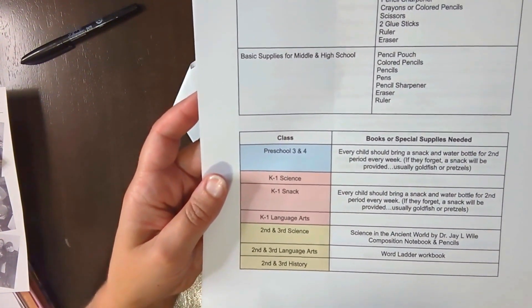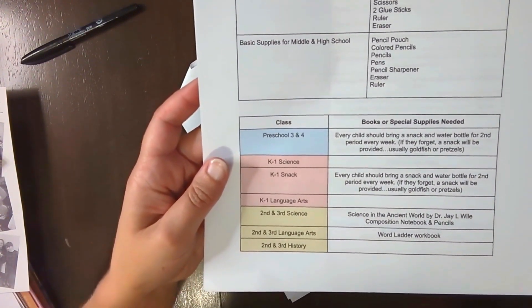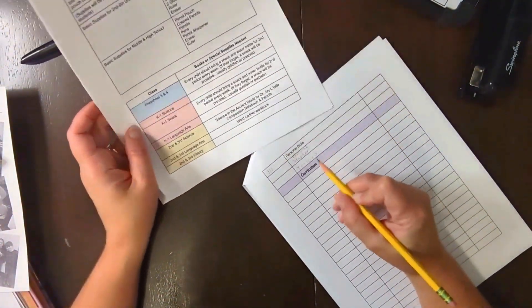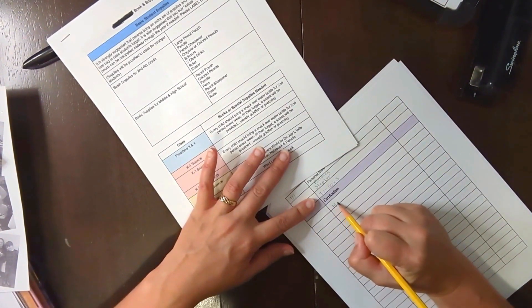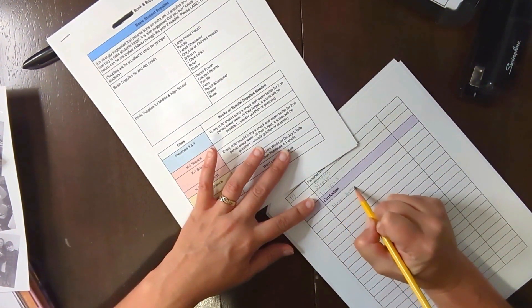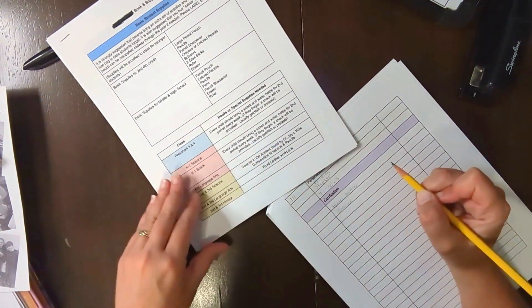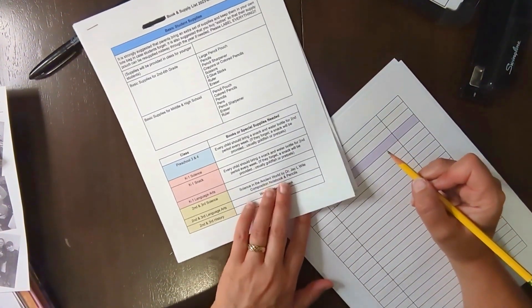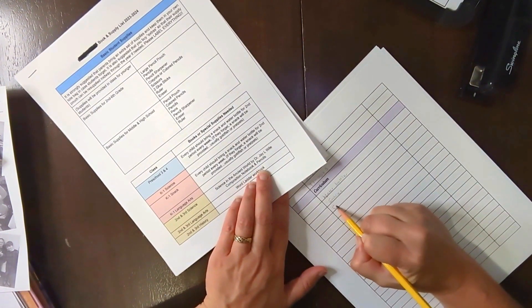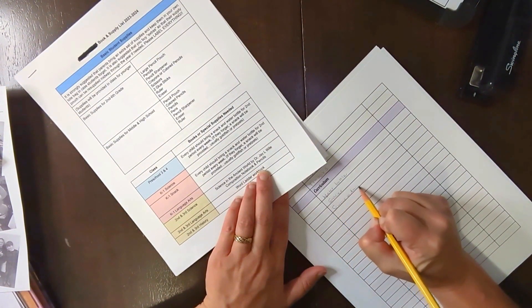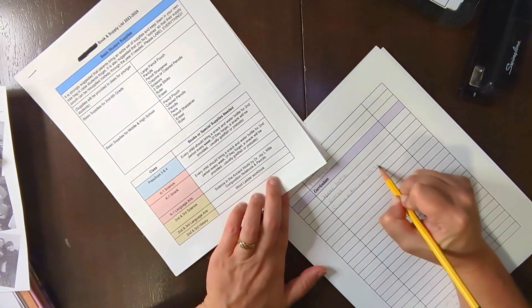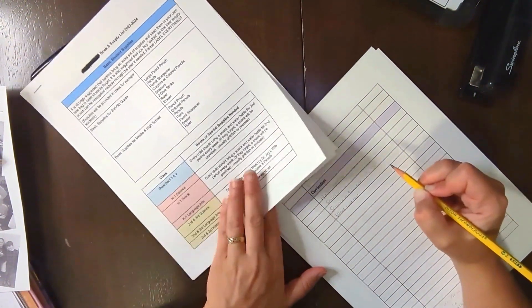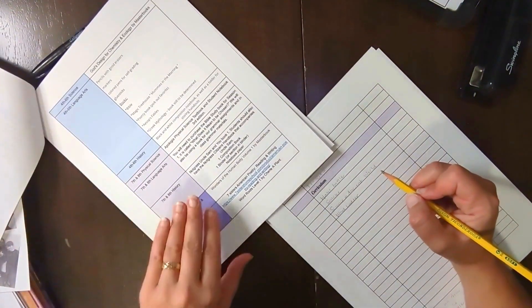And it says that every child should bring a snack and a water bottle for second period every week. So I don't need to buy curriculum for that class, but I'm just going to add water bottle to my list so I make sure I've got it and snacks. Again, it's not really a curriculum thing. I'm just trying to get prepared. I'll have a stash. Here I see that my son needs Science in the Ancient World for his science class.